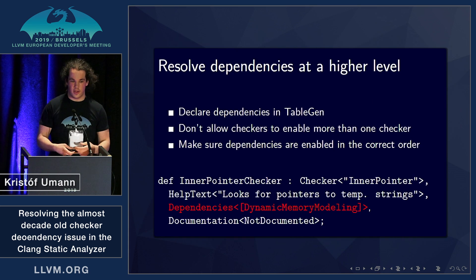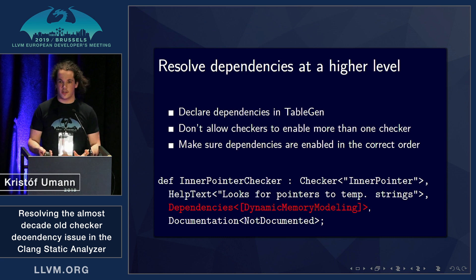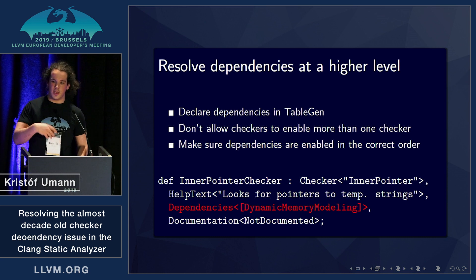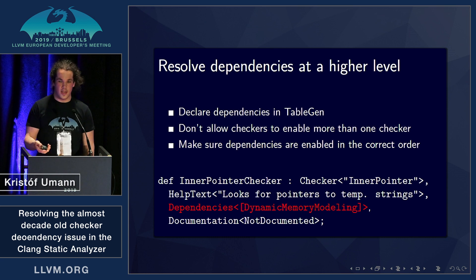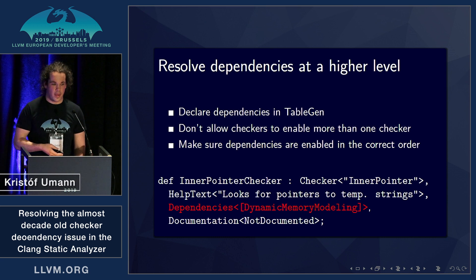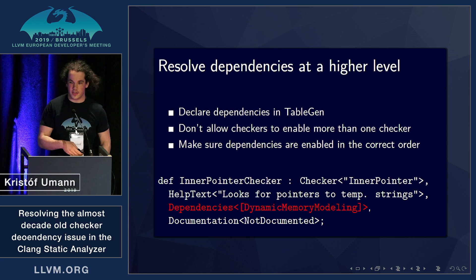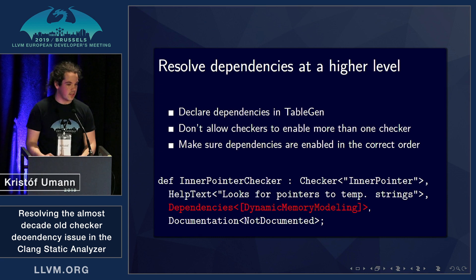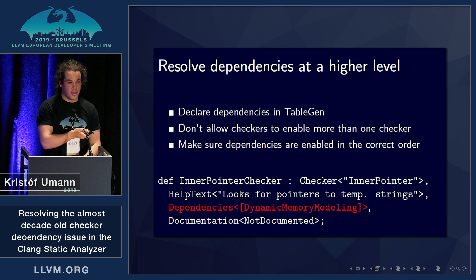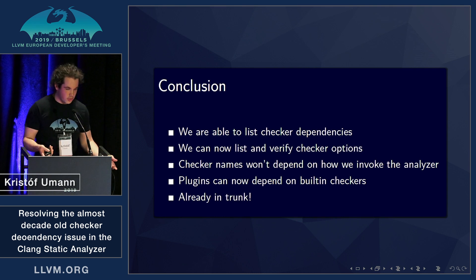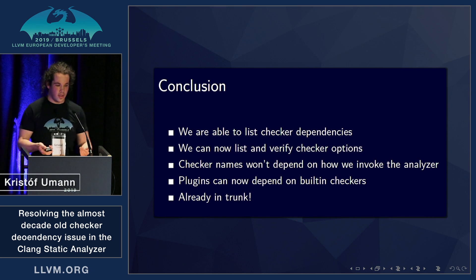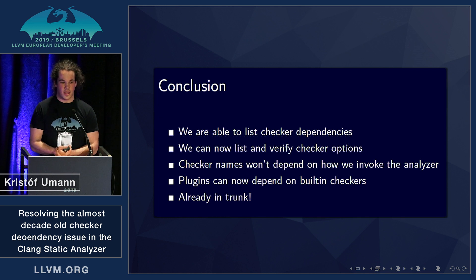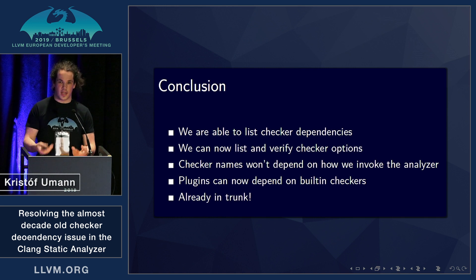After we were done with that, we collected these checker dependencies in a TableGen file, and instead of making checkers register or enable their dependencies themselves, this is handled at a higher level now. We make sure that dependencies are enabled in the correct order, and as you can see at the bottom of the slide, that is how we declare them in a TableGen file. This re-implementation of checker dependencies led to fixing the checker-naming issue, which is now gone and already committed to trunk.